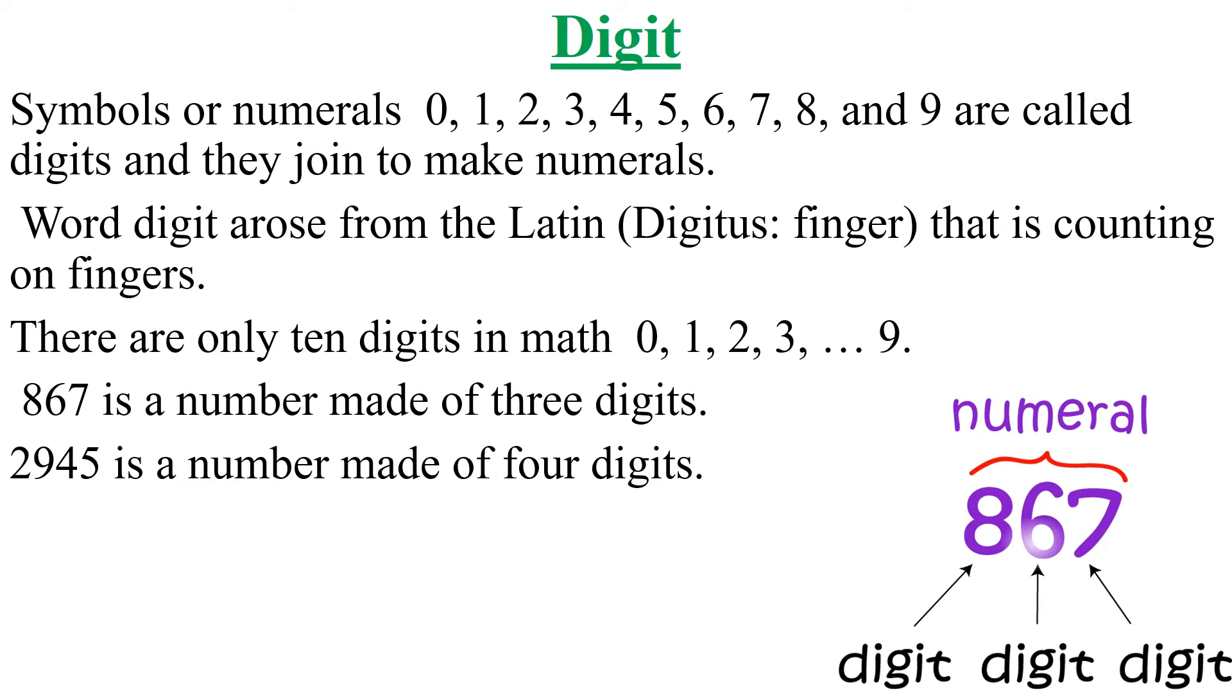Now 867 is a number made of 3 digits: 8, 6, and 7. Likewise, 2945 is a number made of 4 digits: 2, 9, 4, and 5. Digits are just single-valued numerals. Single-valued numerals are called digits, which are 0, 1, 2, 3, 4, 5, 6, 7, 8, and 9.